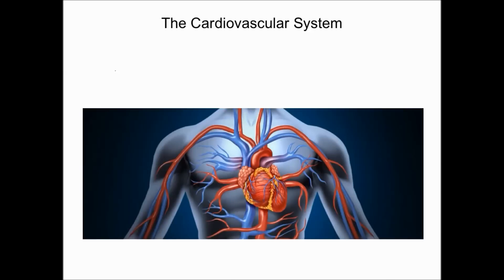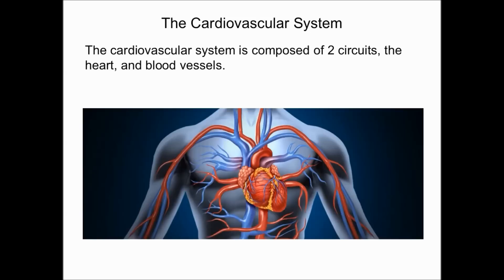For the next set of lectures, we're going to discuss the cardiovascular system. We will discuss the organs and structures of the cardiovascular system, along with how it works. The cardiovascular system is the system responsible for circulating blood to other systems and tissues. It is composed of two circuits, the heart, and blood vessels.